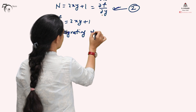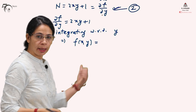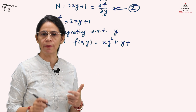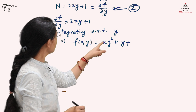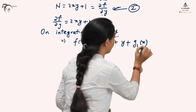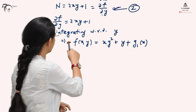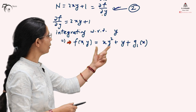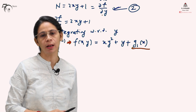Integrating equation (1) with respect to y, f(x,y) = xy² + y. Since we are starting with N and integrating with respect to y, the constant of integration should be a function of x — not a plain constant c — because there may have been an expression in x only that would give 0 when differentiated with respect to y. We must not make the mistake of taking a constant here, or we will not get the correct answer.